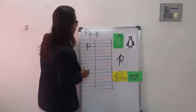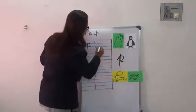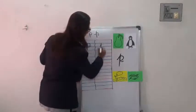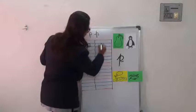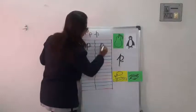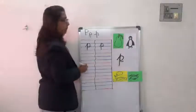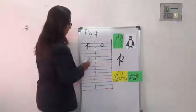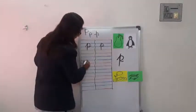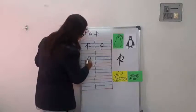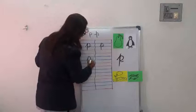Like this. P for parrot. Parrot. Slanting line, standing line. Bring it up the whole line and make the P. And curve. P for pad.